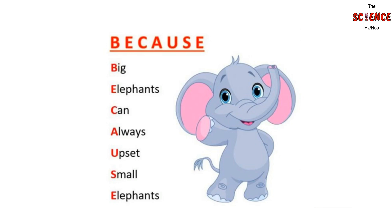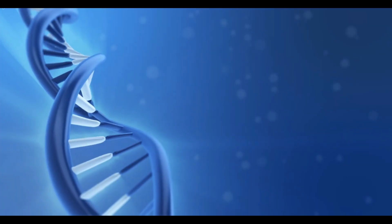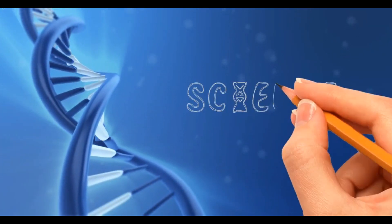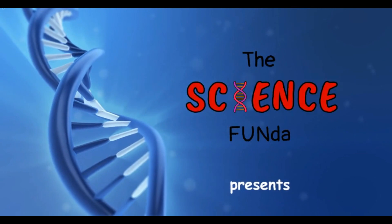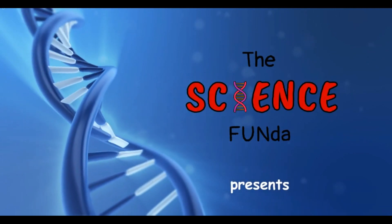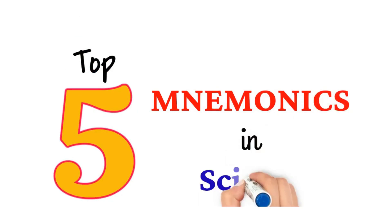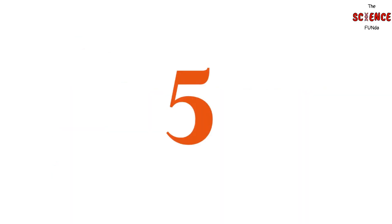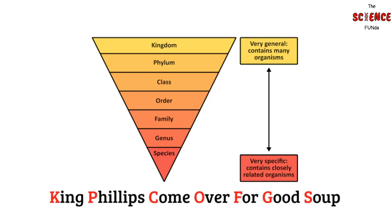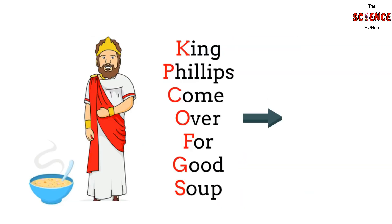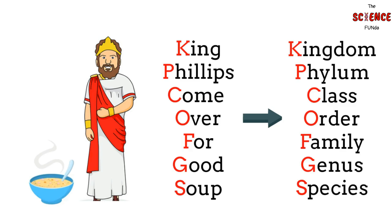In this video, we will list out our top 5 scientific mnemonics to learn science in easier ways. Number 5: Biological Classifications. An easy way to remember the biological classifications is by the mnemonic 'King Philip Come Over For Good Soup.' Each letter stands for a level of classification: Kingdom, Phylum, Class, Order, Family, Genus, Species.